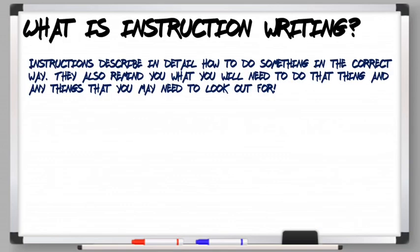So the first thing we need to look at is: what is instruction writing? Instructions are used to describe in detail how to do something in the correct way. They will tell you things like what you need and the things that you might need to look out for, and they will always tell you the steps in the order that you need to do them.